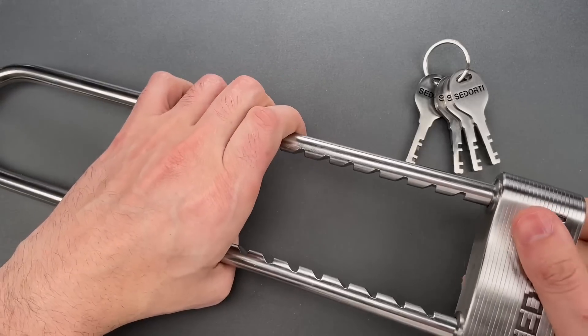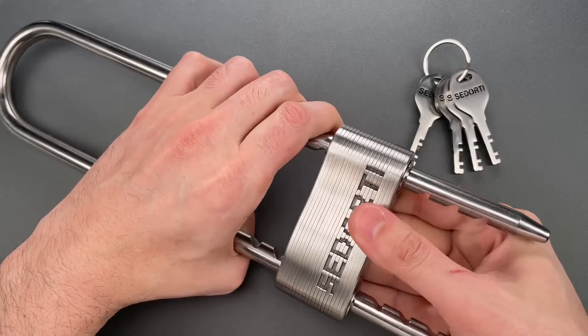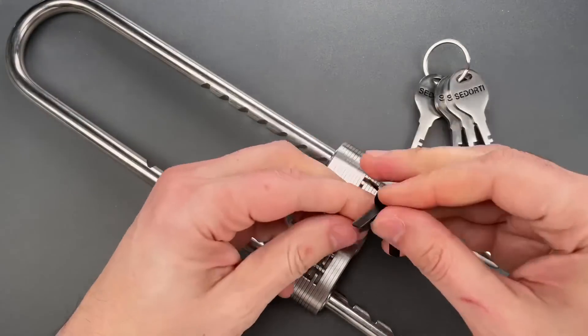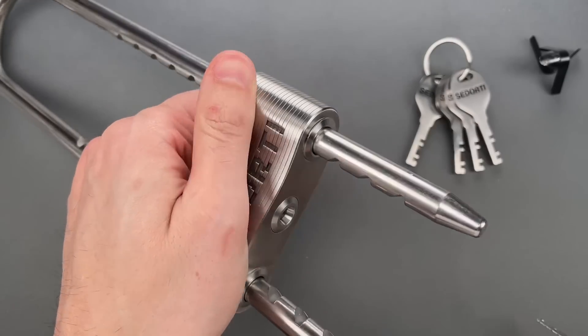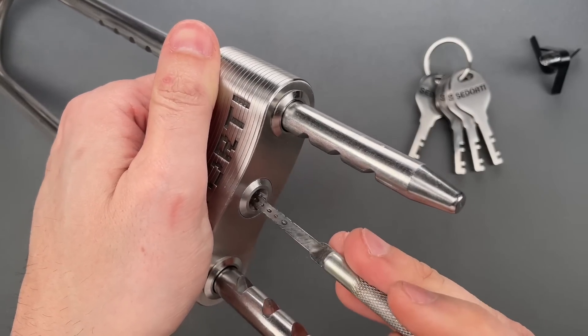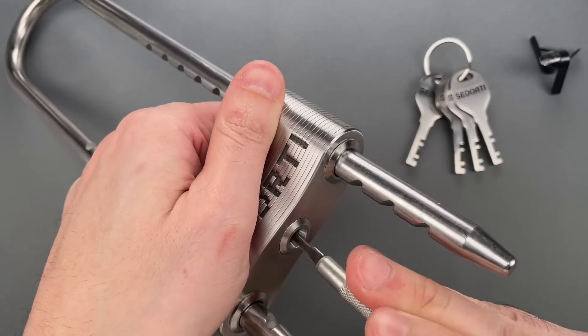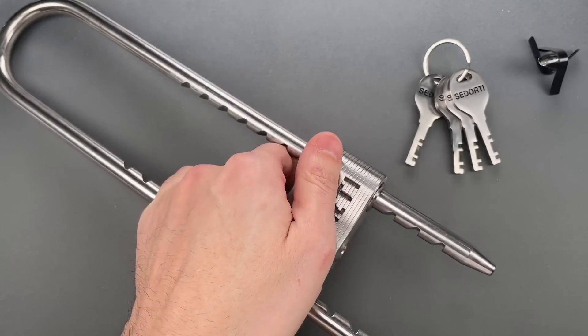Let's lock it up one more time, and you can see the other vulnerability, which is picking. We have a disc detainer core, so the first thing we need to do is turn all of the discs as far clockwise as they'll go.